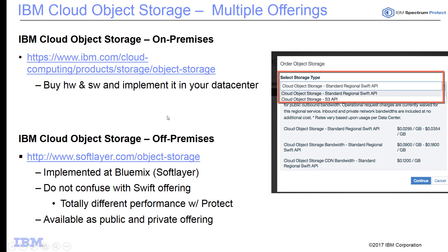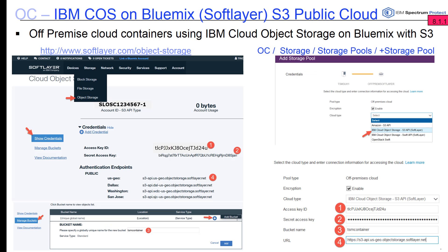IBM Cloud Object Storage has multiple offerings available. The first is the IBM Cloud Object Storage on-premise, where a customer can buy the hardware and software and implement it as a cloud in their own data center. Spectrum Protect has supported this as an on-premise cloud for multiple versions. IBM Cloud Object Storage also has an off-premise offering through SoftLayer, also known as Bluemix, available as both a public and private offering. What we're introducing in IBM Spectrum Protect version 8.1.1 is the ability to configure cloud container storage pools to use IBM Cloud Object Storage via the S3 API, and the S3 API to the Bluemix SoftLayer interface.